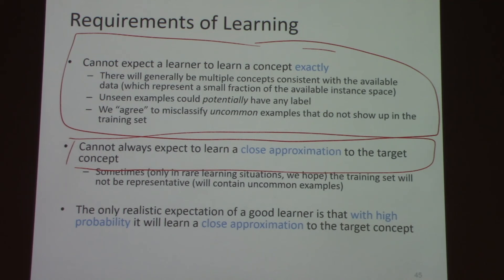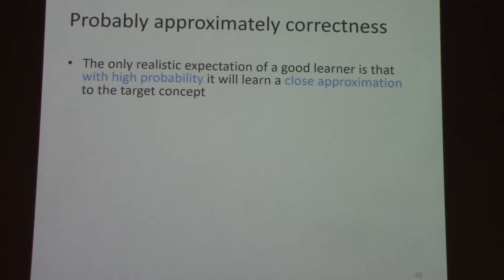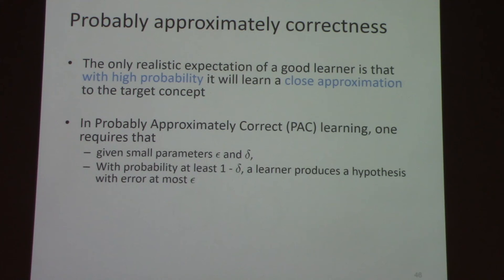The second hope is that the event where we don't get a close approximation is infrequent. We want an approximately correct classifier with the approximation as close to 1 as possible, and we want to get this classifier with high probability. This is the intuition behind probably approximately correct learning — PAC learning. The only expectation we can have of a good learning algorithm is that it will find a close approximation of the true concept with high probability. This is formally defined using two small parameters: epsilon and delta.